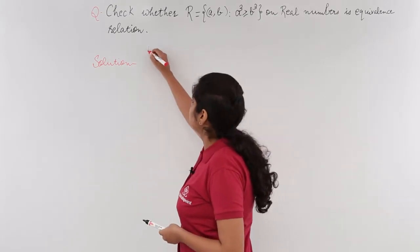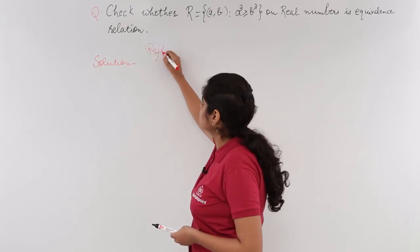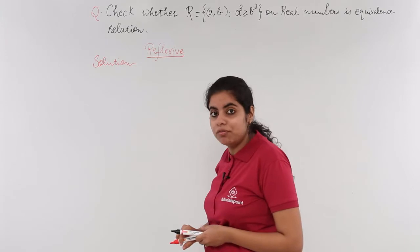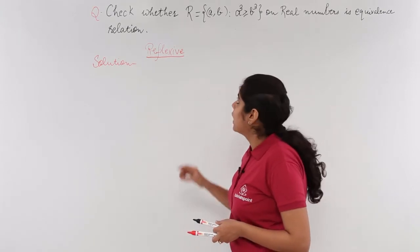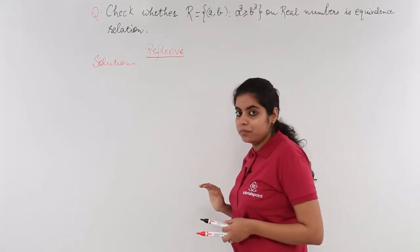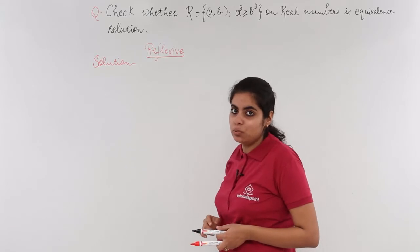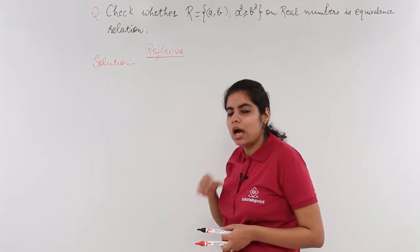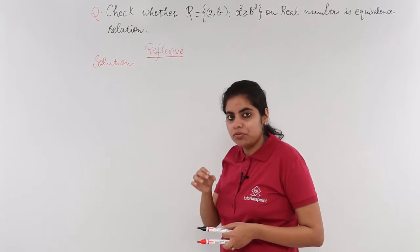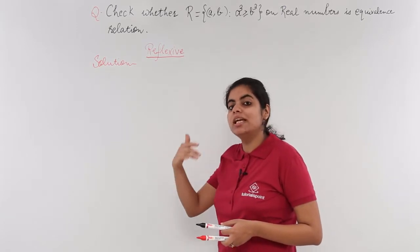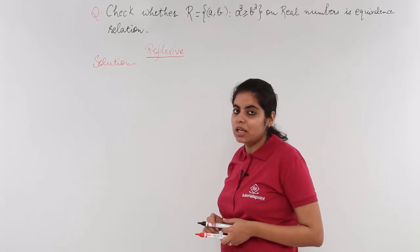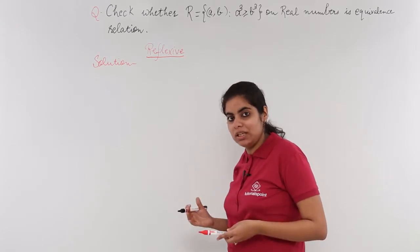I'll write the heading: reflexive. The relation given is a³ ≥ b³. For a reflexive relation, I know that every element must be related to itself. Can we substitute b for a? Yes.